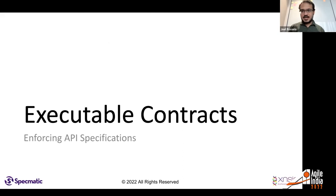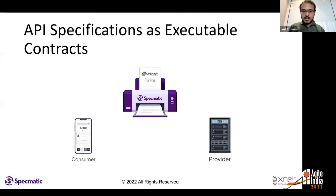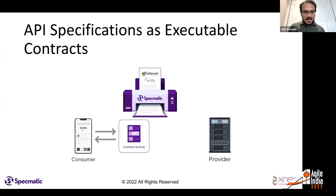What if we could turn the API specifications themselves into executable contracts? That's exactly what we'll show you. The open-source tool Specmatic takes an OpenAPI specification and for the consumer generates a contract stub — also called a smart mock — so the consumer can verify their expectations match the contract. For the provider, Specmatic takes the same OpenAPI specification and runs contract-as-test, faithfully simulating requests a consumer would send and validating responses.